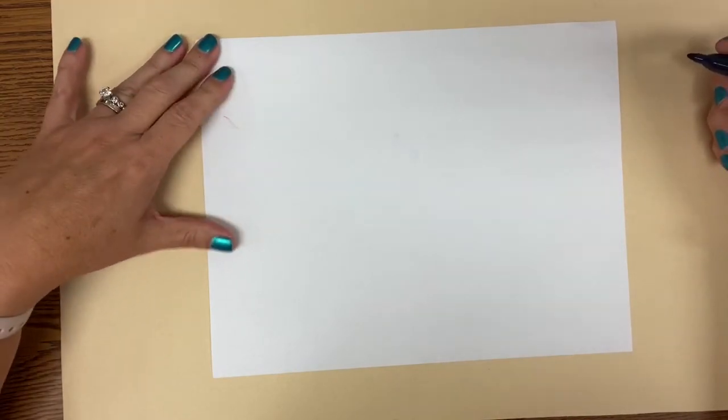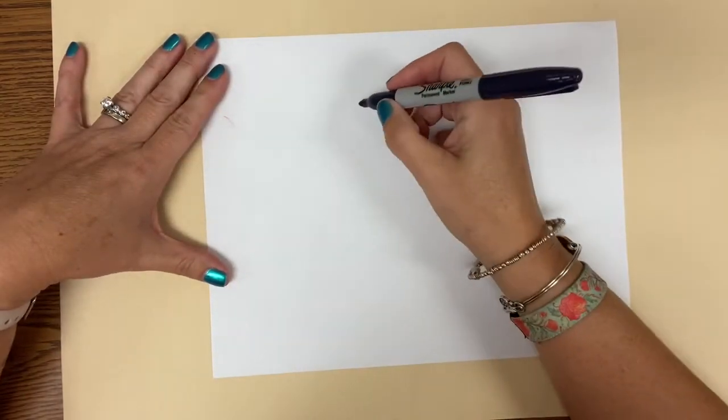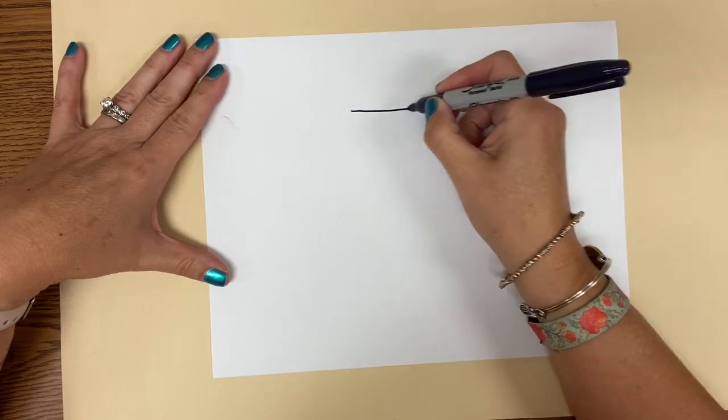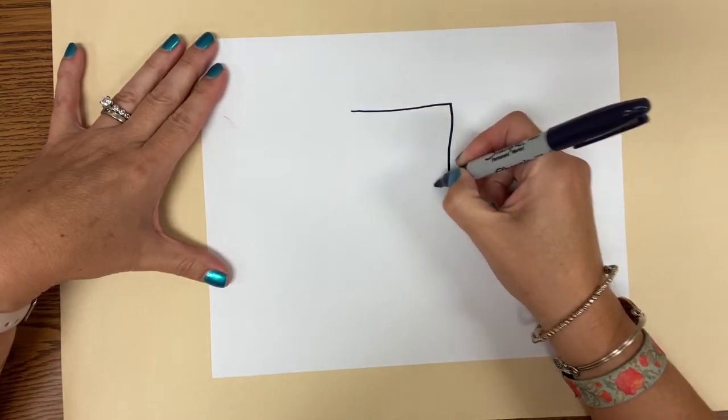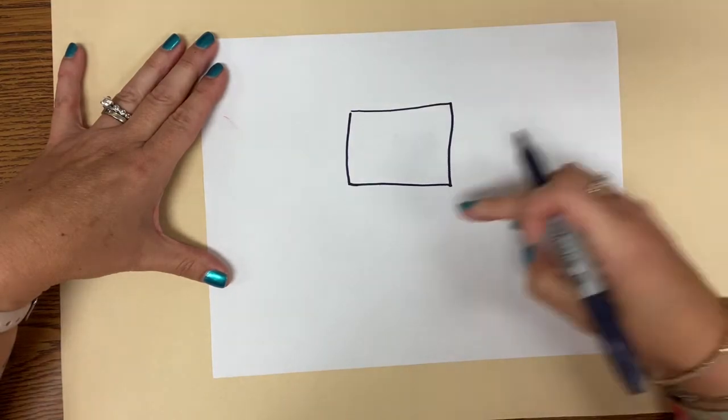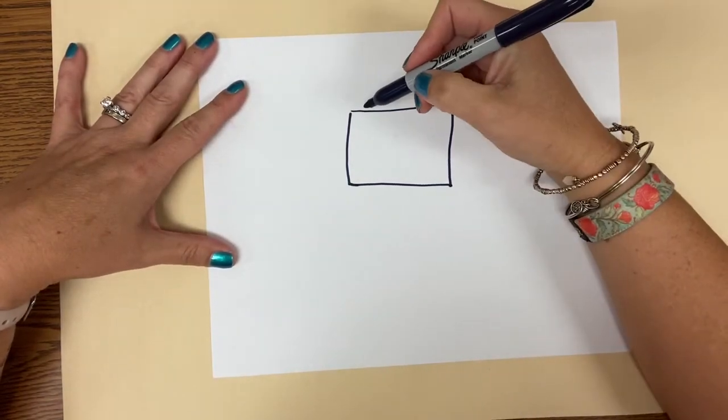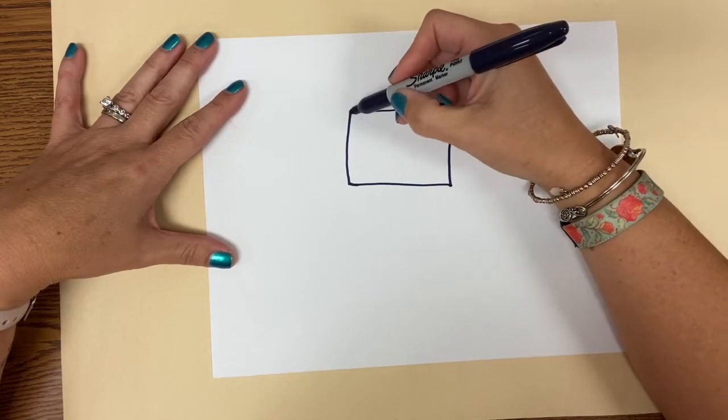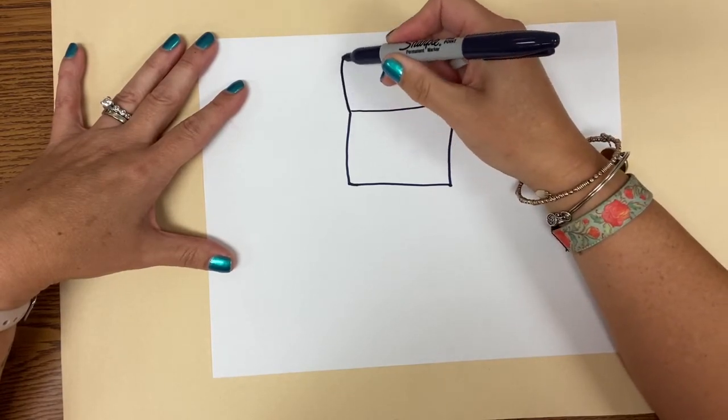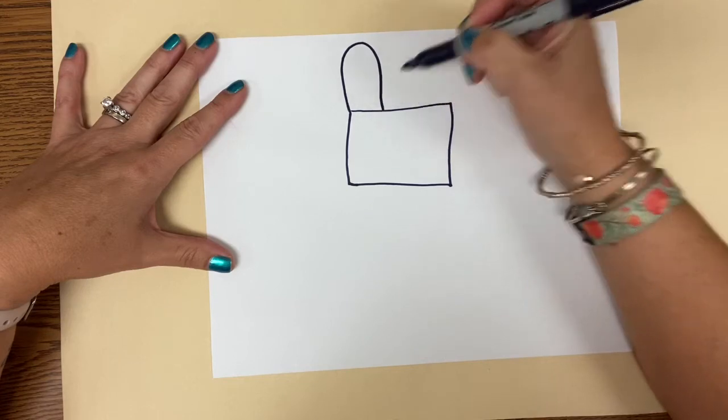So we're going to start with Gaston's head and his head is kind of a square shape. When you draw his head, make sure that you leave some room at the top for his ears and some room for his body. So his ears are kind of like an oval shape or a big U on the top, a big upside down U shape.